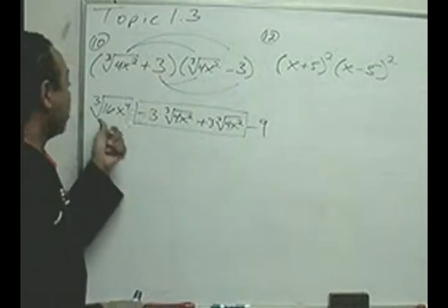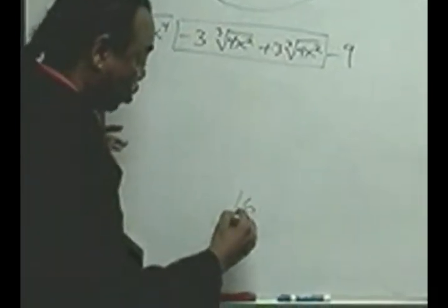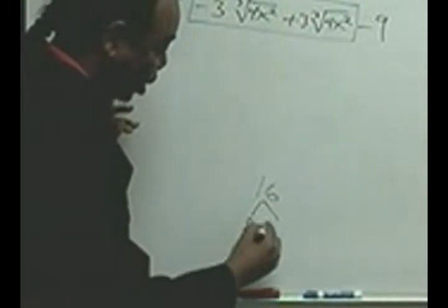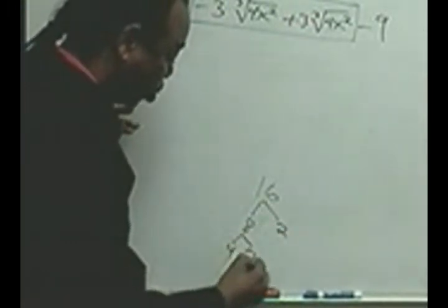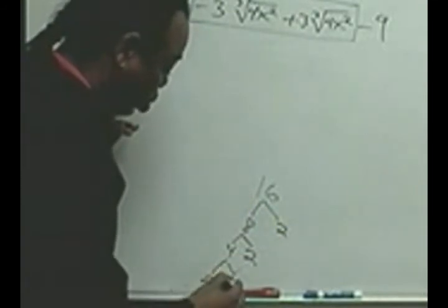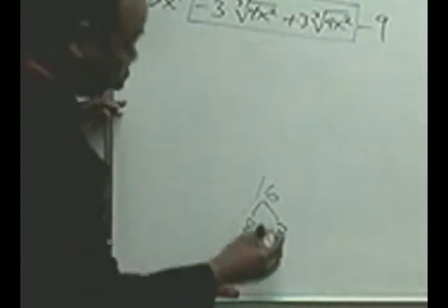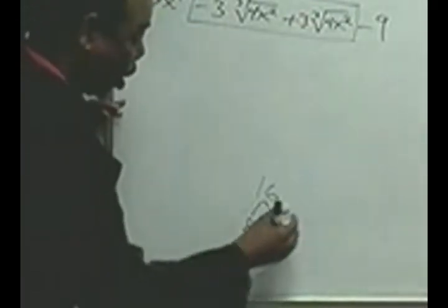Then, I want to simplify the 16 and the x to the 4th. Well, 16, let's factor that. We can write that as 8 times 2, and 8 can be written as 4 times 2, and 4 can be written as 2 times 2. And we see here, for the cube root, we have a triplet of 2s there.